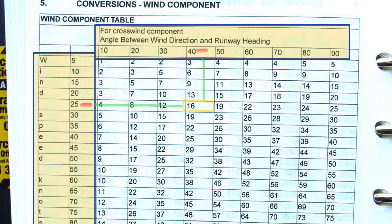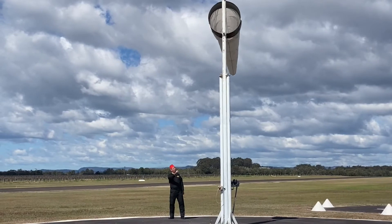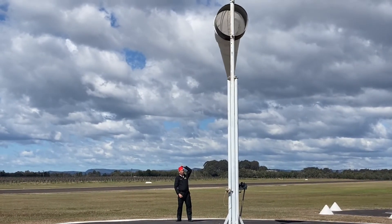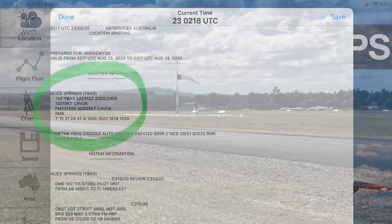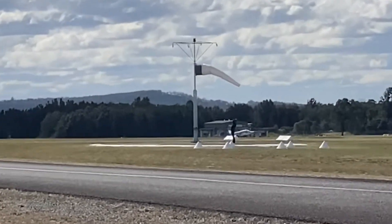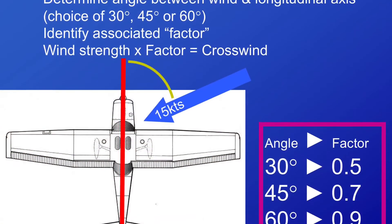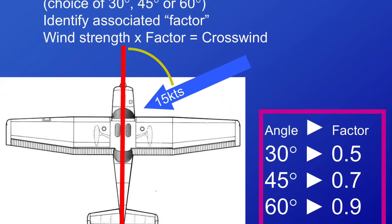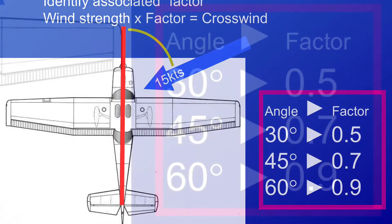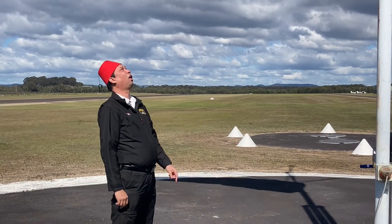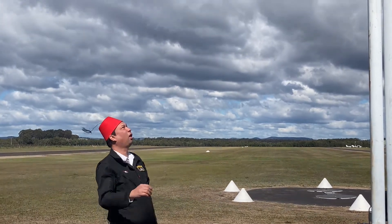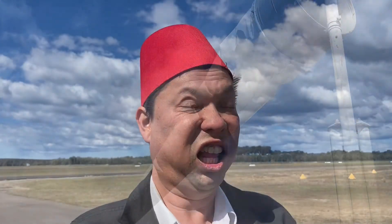Alternatively, determine the angle between the runway direction and the wind direction. Wind speed and direction will be found on the TAF, or terminal aerodrome forecast. As a rule of thumb, if the angle between the runway and the wind was 30 degrees, then the crosswind component would be equal to half the wind speed. The crosswind component increases as the angle increases, as is indicated in the diagram.